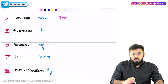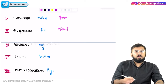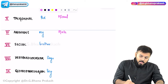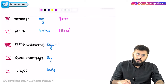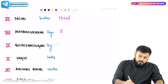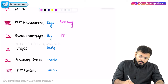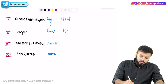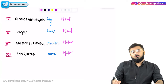Trigeminal (CN V) — B = both, meaning mixed sensory and motor. Abducens (CN VI) — M = motor. Facial (CN VII) — B = both mixed. Vestibulocochlear (CN VIII) — S = sensory. Glossopharyngeal (CN IX) — B = both mixed. Vagus (CN X) — B = both mixed. The final two (CN XI and XII) are both motor.